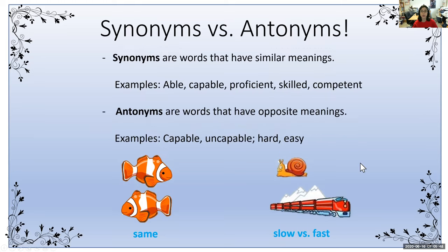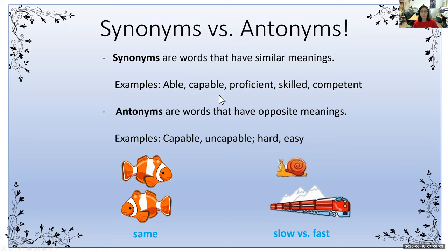So for our definitions, synonyms are words that have similar meanings. You can remember this by looking at the first letter — synonym starts with an S, and similar also starts with an S. Synonyms are words that have similar meanings. So for example, able, capable, proficient, skilled, and competent all have that same basic meaning.